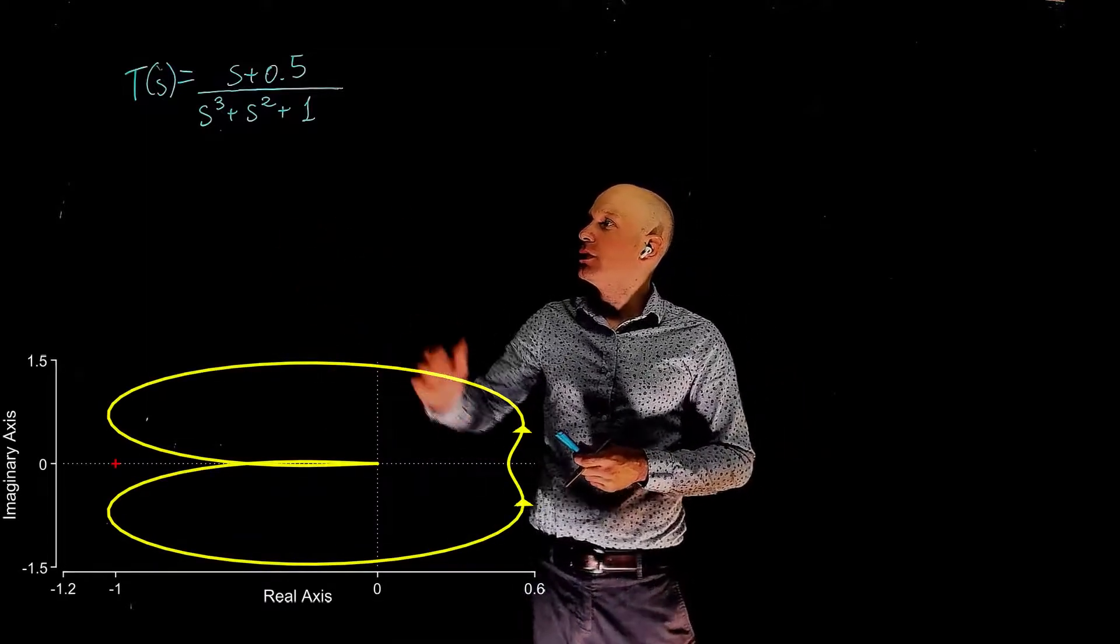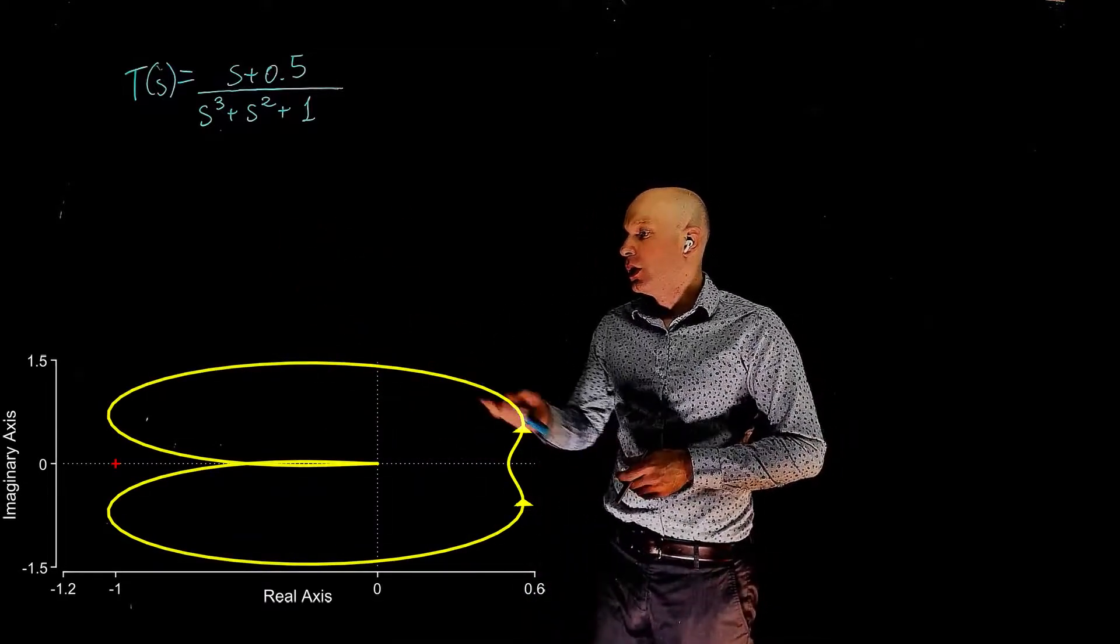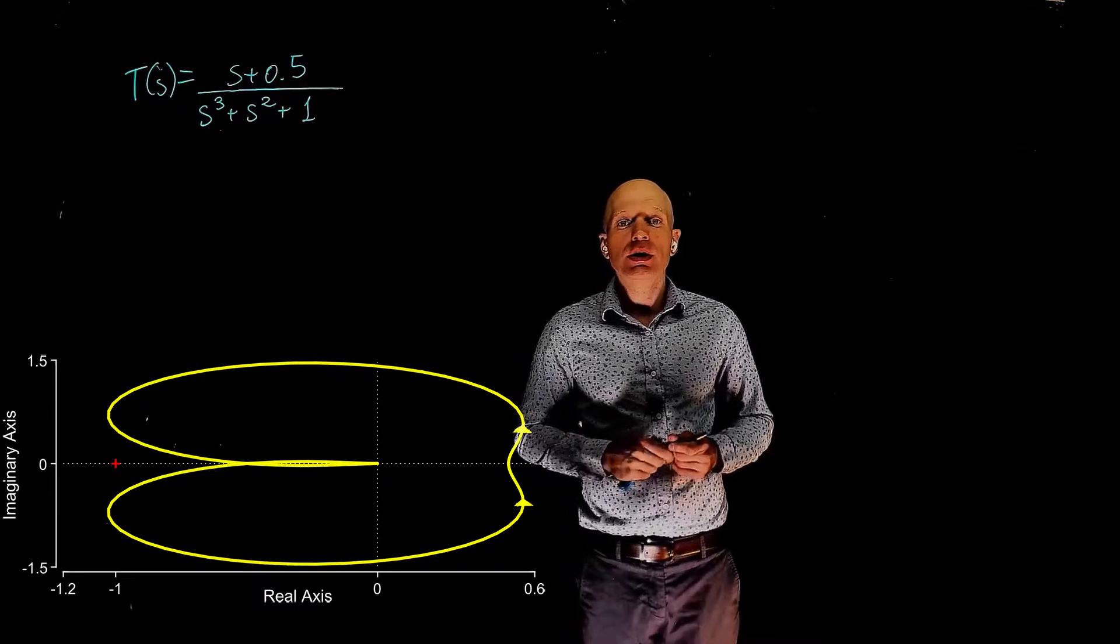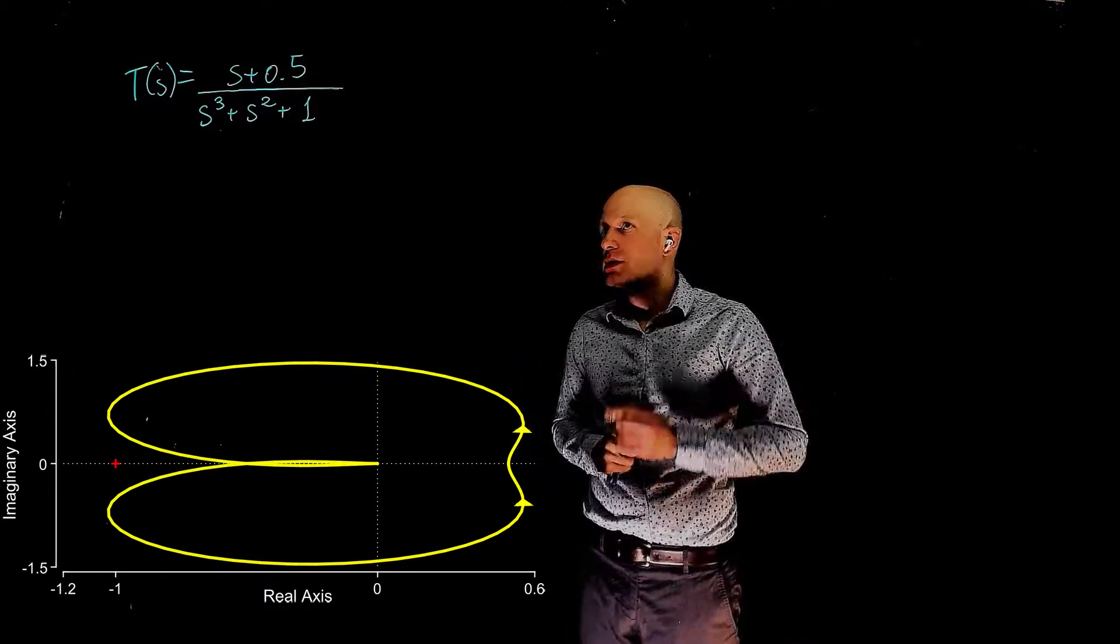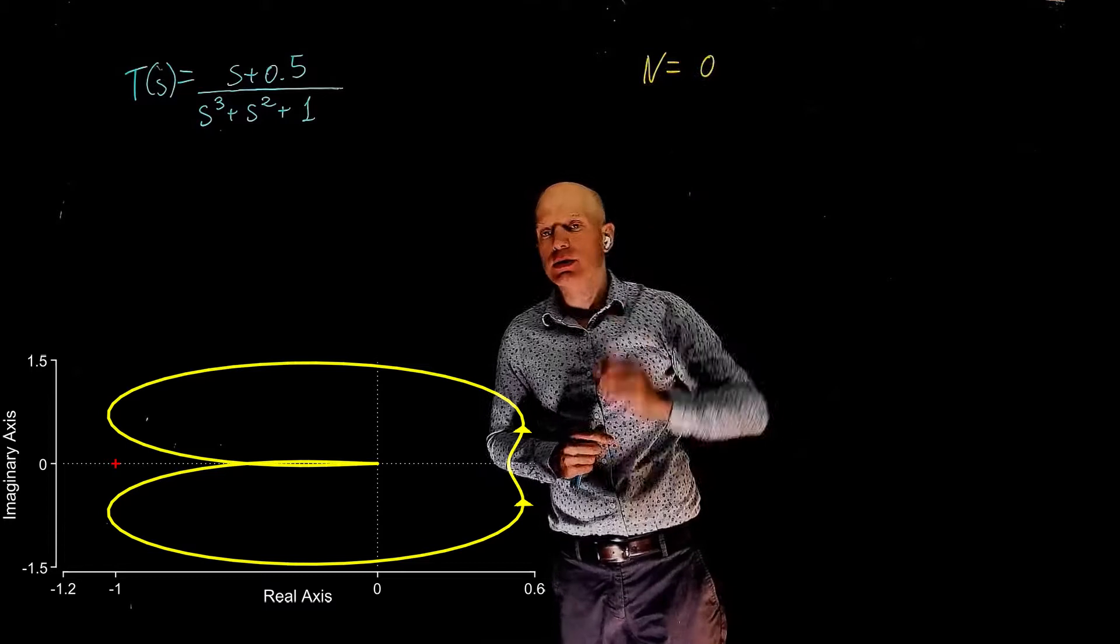Here is the Nyquist plot obtained for T. We see that this Nyquist plot does not encircle negative 1, hence N, the number of encirclements of negative 1, is 0.